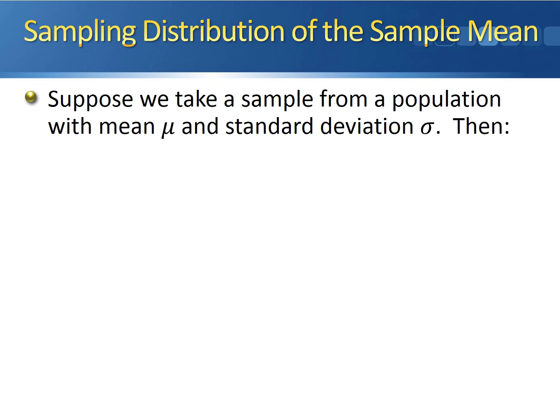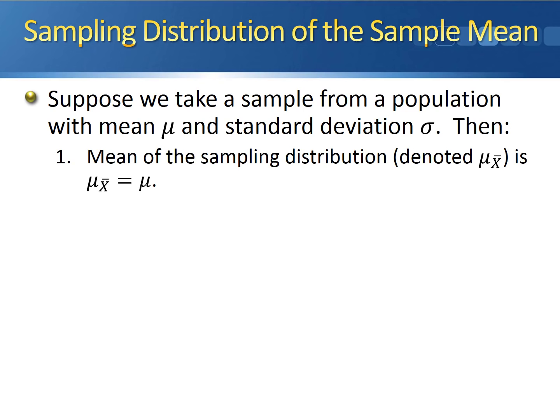Let's also review what the sampling distribution of the sample mean actually is. We discussed this last class, but it's going to come into play directly whenever we calculate probabilities for the sample mean. Suppose we take a sample from a population with mean mu and standard deviation sigma. The mean of the sampling distribution, denoted mu sub x-bar, is equal to the mean of the original population mu.